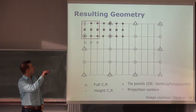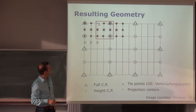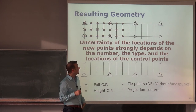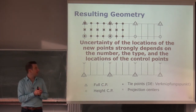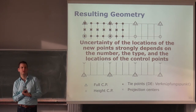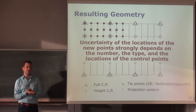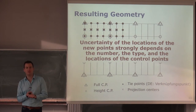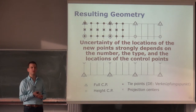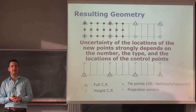The uncertainty of estimated point locations depends on how many control points are in the environment. Not only the number matters, but also where they are located and what type they are. Full control points — where x, y, and z are known accurately — are best. In the simplest example with four corner control points and two intermediate points, the uncertainty is very close to sigma zero, the fundamental measurement uncertainty.